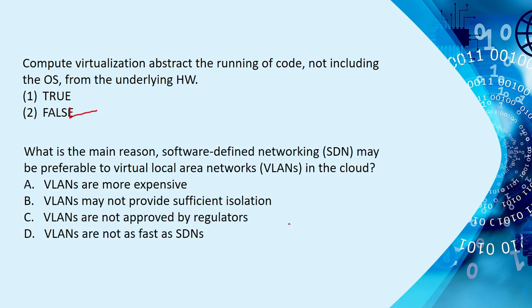Next question: 'What is the main reason software-defined networking (SDN) may be preferable to VLANs in the cloud?' The options are: VLANs are more expensive; VLANs may not provide sufficient isolation; VLANs are not approved by regulators; VLANs are not as fast as SDN. The correct answer is that VLANs may not provide sufficient isolation, particularly for multi-tenancy in the cloud.